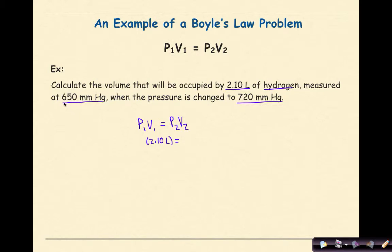Measured at 650 mm Hg—so my P1 is 650 mm Hg. When the pressure is changed to 720 mm Hg, that means my P2 is 720 mm Hg, and I'm solving for V2.